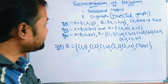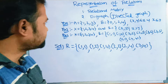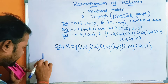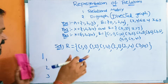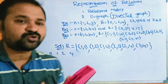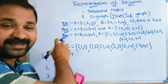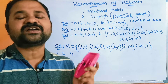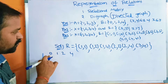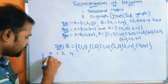Now we represent this relation with a relational matrix. A matrix is a collection of rows and columns. The rows correspond to elements of the first set: 1, 2, 3. The columns correspond to elements of the second set: 0, 1, 2, 4. If an ordered pair is present in the relation, the matrix element is 1; if not, the matrix element is 0. For (1,0): not present in the relation, so the matrix element is 0.